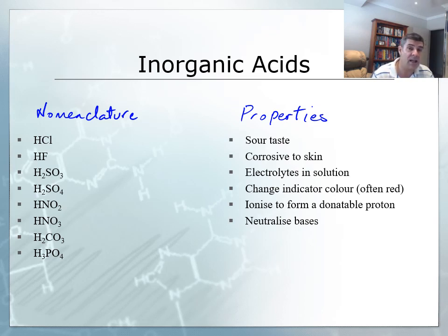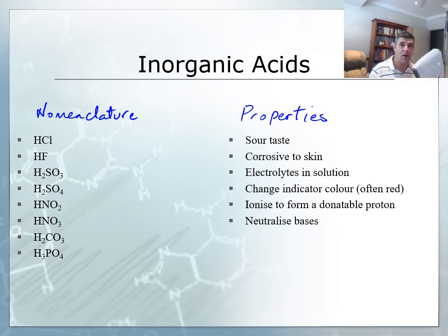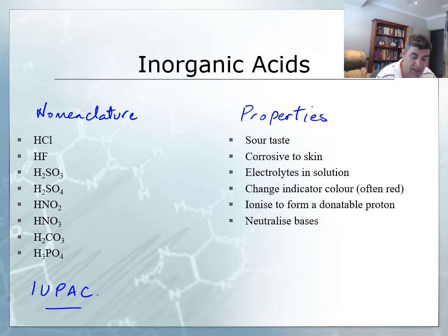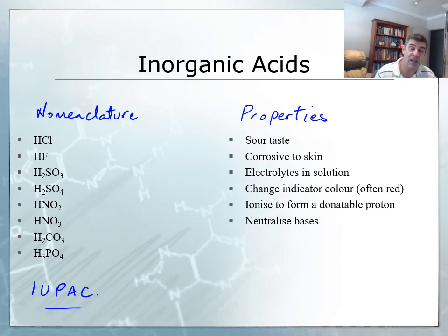What we're primarily interested in here is just the ways in which we go about naming these different types of acids. The system that we're using is known as the IUPAC system, which is the International Union of Pure and Applied Chemistry. It is basically the system used by all chemists around the world to decrease ambiguity and ensure that we're all communicating about the same compounds in the same way.